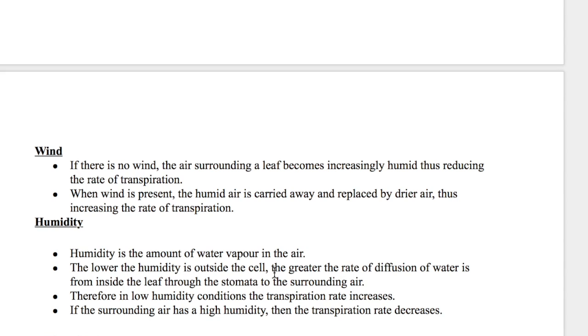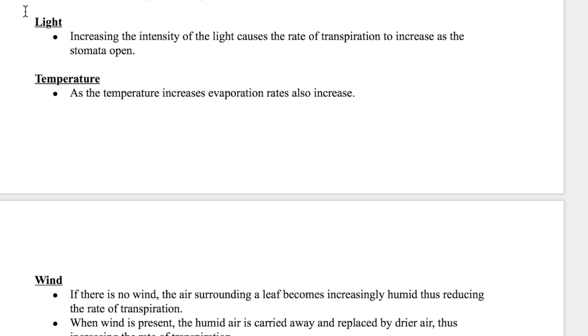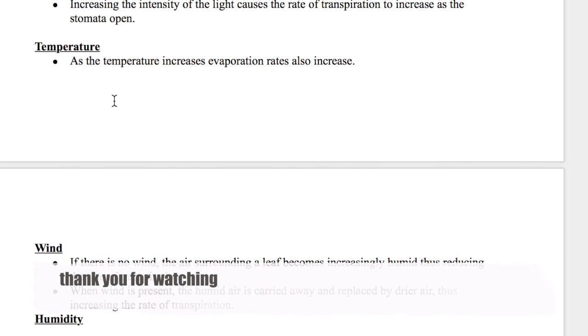The lower the humidity is outside the cell, the greater the rate of diffusion of water. In simple words, high humidity causes low transpiration. High wind causes high transpiration. High temperature and high light both cause high transpiration. And that is it for 9.1.